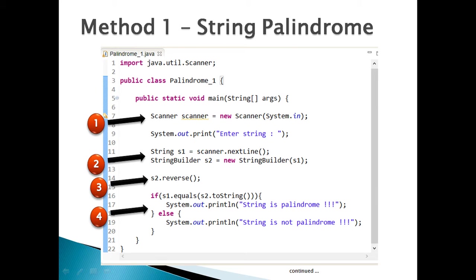Method 1: In the main method of the Demo class, step 1 — create a Scanner object: Scanner scanner = new Scanner(System.in). In order to use Scanner class we have to first import it. The Scanner class will read values from the console which the user enters, using System.in as the input stream which listens to the Java console.